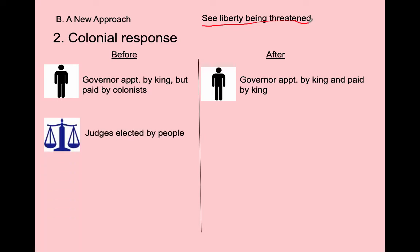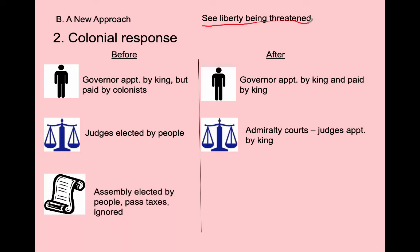Turning to the judicial branch: during the era of salutary neglect, judges were elected by the people and juries were composed of the people. But now, admiralty courts are being used where the judge is hired by the king and the jury is the judge. The colonists have no say in their legal system—they don't pick the judges and they're not on juries anymore. They have lost the judicial branch of government.